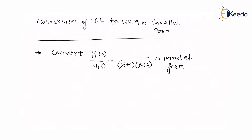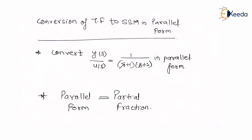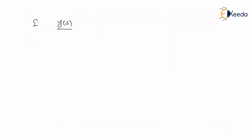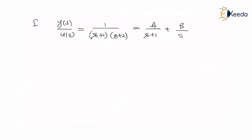Before we proceed for the parallel form, let us learn a short trick: whenever we say parallel form, it actually means a partial fraction. Step number one — the problem was y upon u is equal to 1 upon (s+1)(s+2), which equals a upon (s+1) plus b upon (s+2).